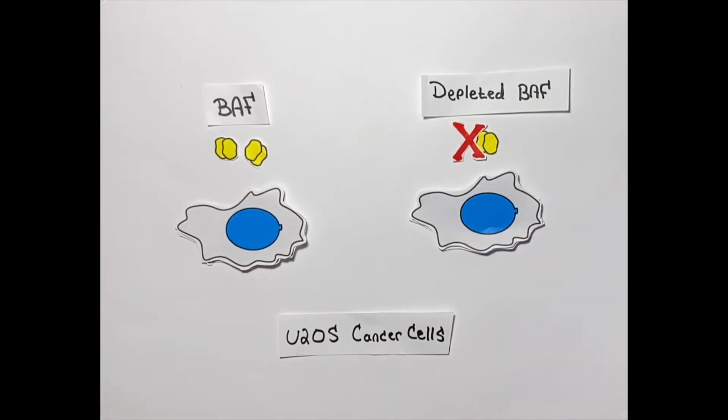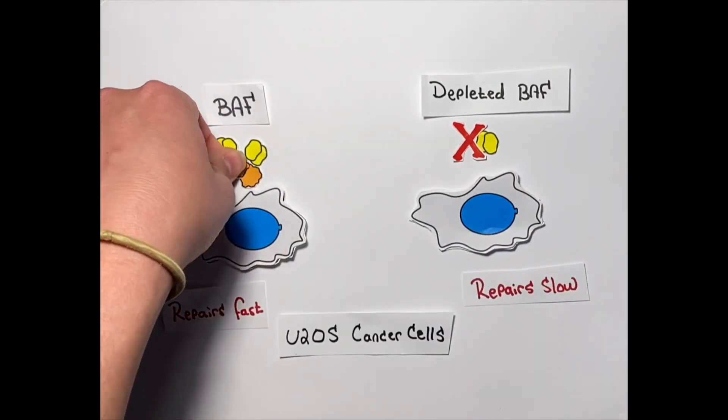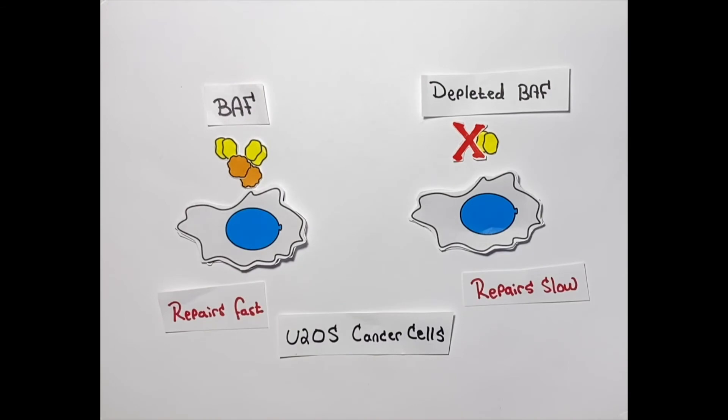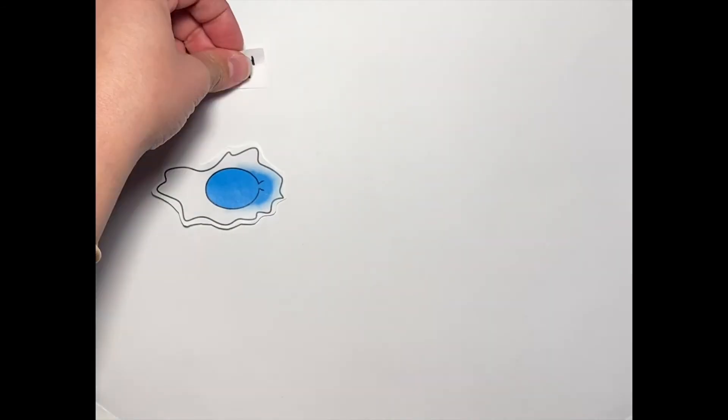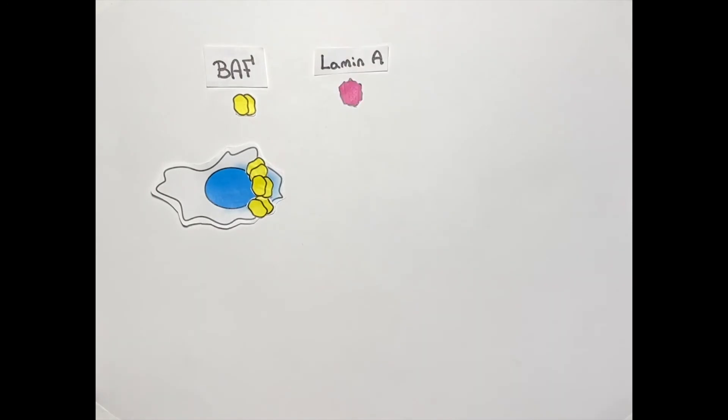This indicates that BAF makes repairs happen faster. We found this activity partly depends on BAF's ability to recruit other nuclear envelope proteins, some of which are attached to membrane. We think BAF is part of an assembly line that brings in membrane to patch breaks in the nuclear membrane.